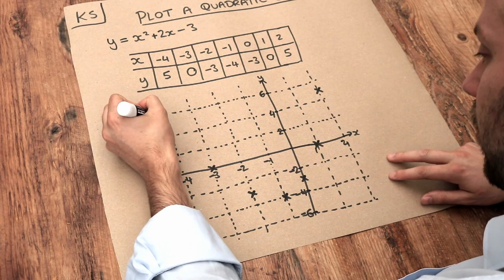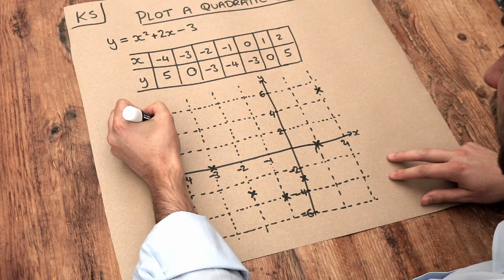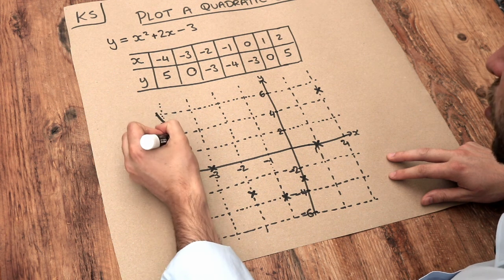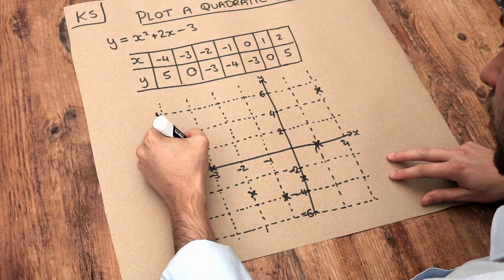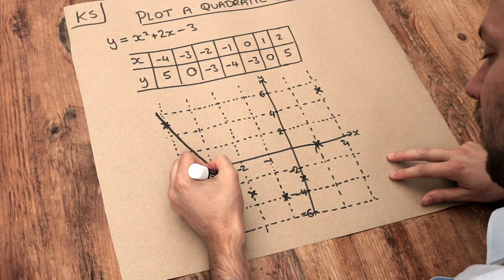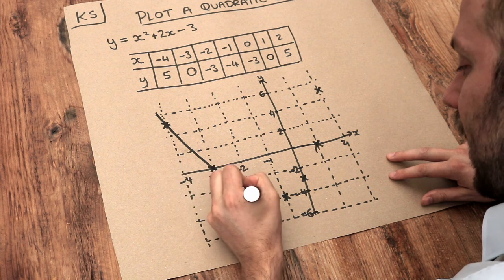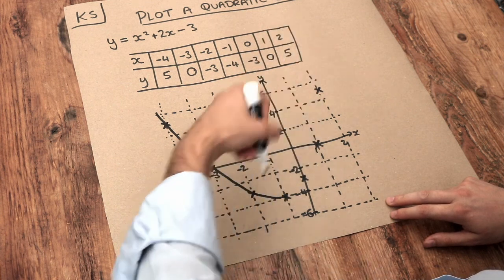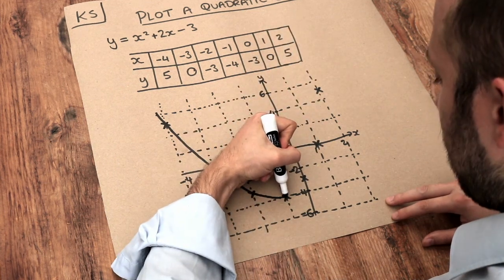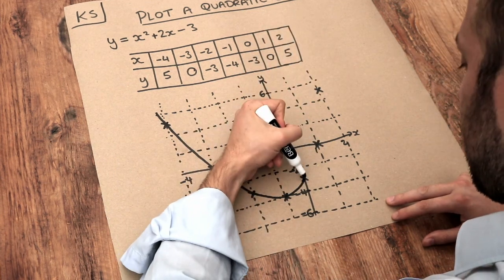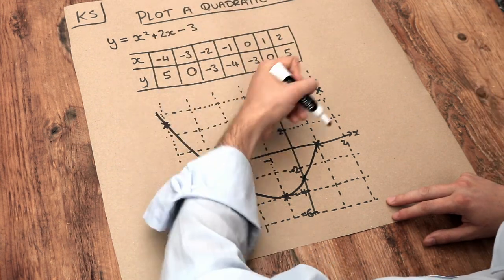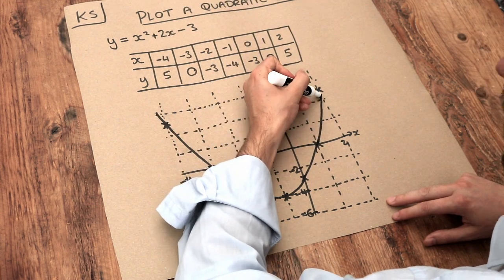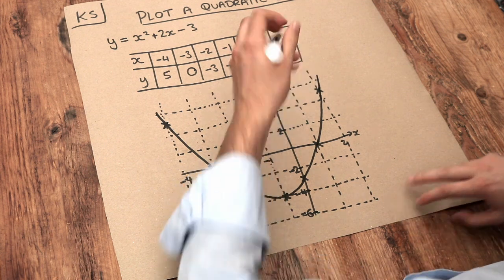And all we need to do is just join these up with a curve. So what I tend to do is a continuous straight line without taking my pencil or pen off the paper. Now do not join them up with straight lines. We need to join it up with a smooth curve. Making sure that we go through each of these points. We don't sort of try to aim for the point and then miss them. So like that. With smooth wrist action. And then we get this here.